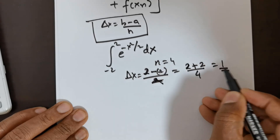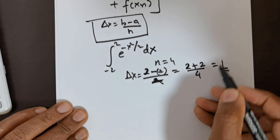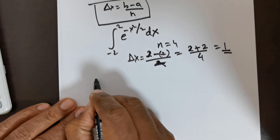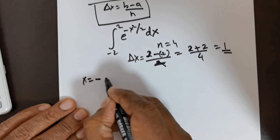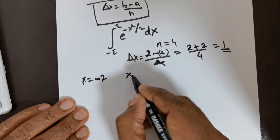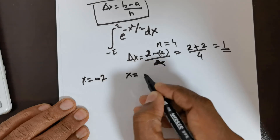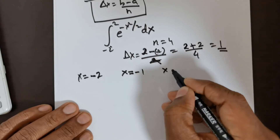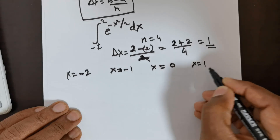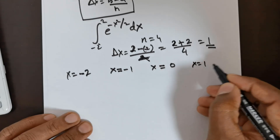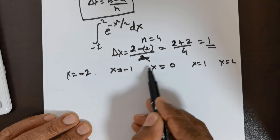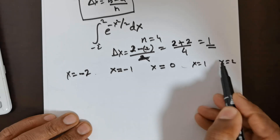So we increment in steps of 1. Starting with x equal to negative 2, the next value is negative 1, then 0, then x equal to 1, and then x equal to 2. So we have 1, 2, 3, 4 intervals.